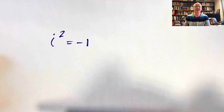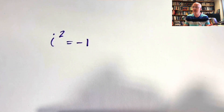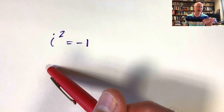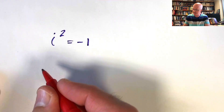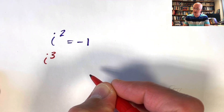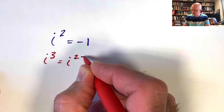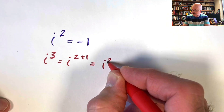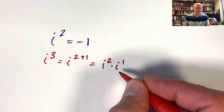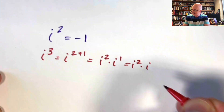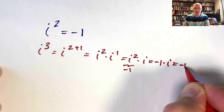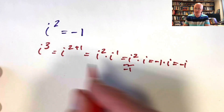For the moment, let's just explore what this condition would mean if we want the usual rules of algebra to still hold — in particular, what it would mean to raise i to other integer powers like i cubed, i to the fourth, i to the fifth, and so on. What should i cubed be? Well, three is two plus one, so i cubed is i squared times i to the first. i to the first is just i, and i squared equals negative one, so we get negative one times i, which equals negative i. If we want the usual rules of algebra to hold, i cubed equals negative i.